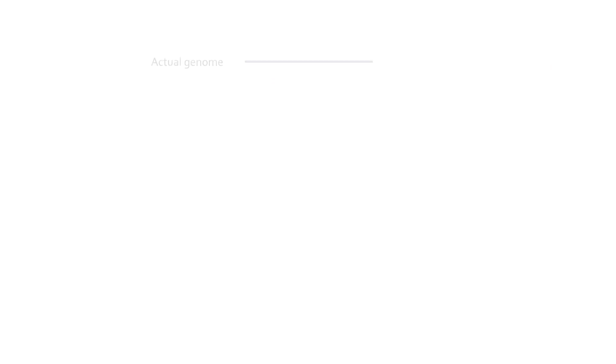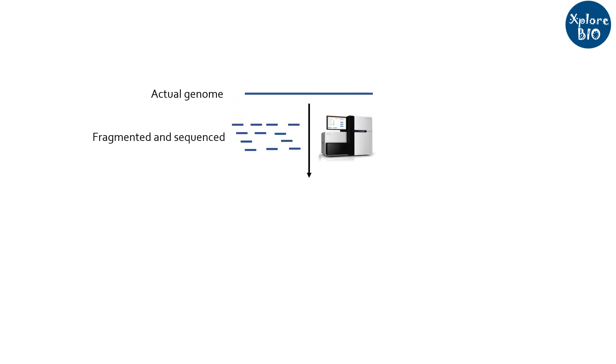Most of the time, genomes are too huge to be sequenced in a single go. Therefore, the genome is first fragmented and then sequenced in the form of short reads. This is termed shotgun sequencing.